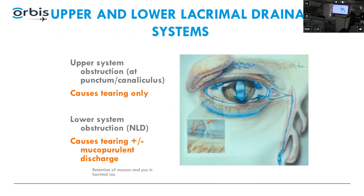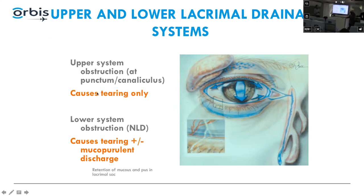I separate the lacrimal system into upper and lower. The upper system is the punctum and canaliculus; the lower system is the lacrimal sac and nasal lacrimal duct. Obstruction in the upper system — punctum or canaliculus — usually causes only tearing. Obstruction in the lower system causes tearing plus mucus discharge.